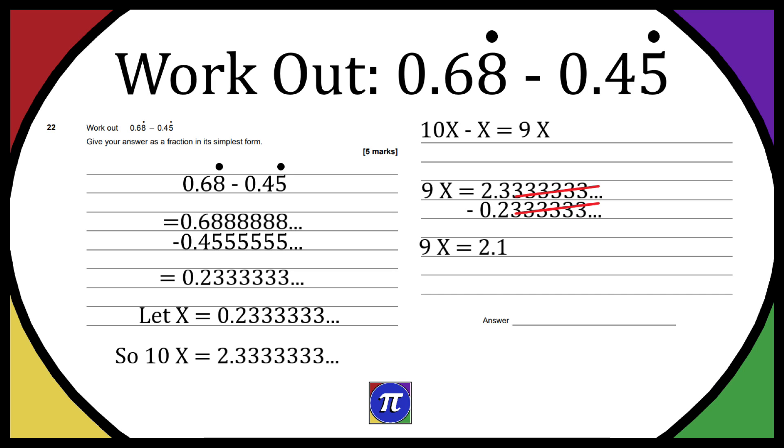Now we just need to rearrange to get x as that's our answer and it's going to be in a fraction form. Hopefully that made sense. If it didn't, leave any comments or questions below. We just labeled our answer as x and we did some rearranging to get it in fraction form.